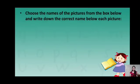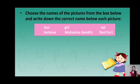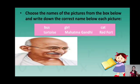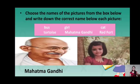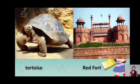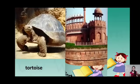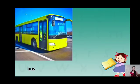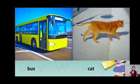Children, now we have to choose the names of the pictures from the box below and write down the correct name below each picture. It is the picture of Mahatma Gandhi. This is the picture of a girl. It is the picture of the tortoise. It is the picture of the Red Fort. The next picture is that of a bus. And the last one is the picture of a cat.